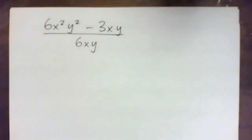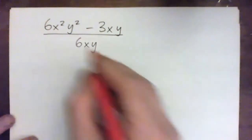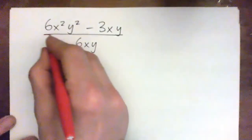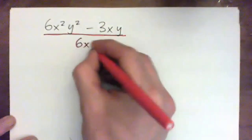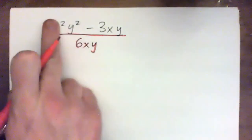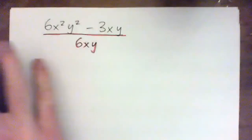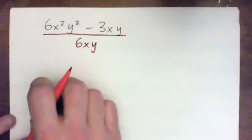So we got 6x squared y squared minus 3xy all over 6xy, right? So once again, everyone, I want y'all to think of it as like the whole thing is divided by 6xy. Not just this guy, but this guy as well. Like everything is divided by 6xy.